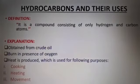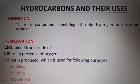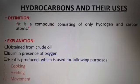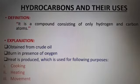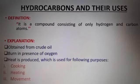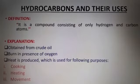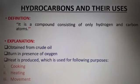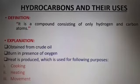The next topic is hydrocarbons and their uses. A hydrocarbon is a compound consisting of only hydrogen and carbon atoms. Hydrocarbons are obtained from crude oil and petroleum. When hydrocarbons burn in the presence of oxygen, a lot of heat is produced, and this heat is used for the following purposes: cooking, heating, and movement.